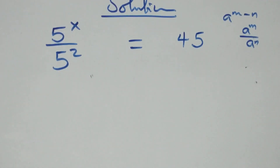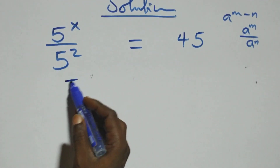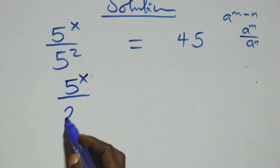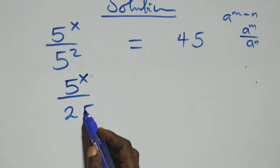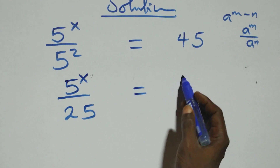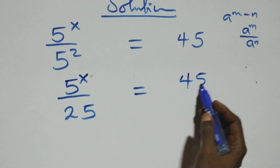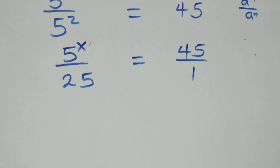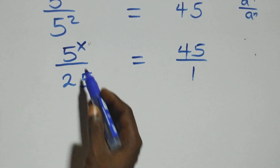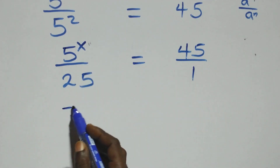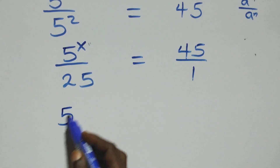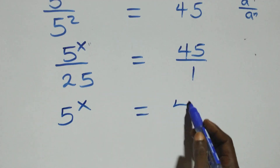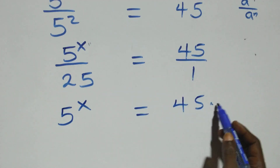Here this becomes 5 raised to power x over 5 squared — 5 times 5, that is 25 — and equals to 45 over 1. The next step: we cross-multiply. 5 raised to power x times 1 is the same thing as 5 raised to power x equals to 45 times 25.